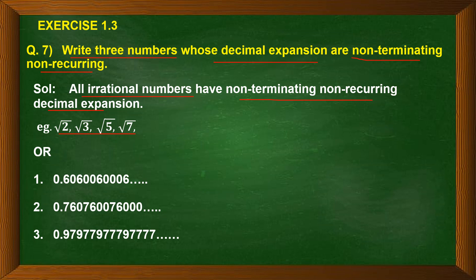Every prime number under a root is an irrational number whose decimal expansion is going to be non-terminating and non-recurring. Or you can have decimal numbers like 0.606006000 and so on, 0.76076007600 and so on.